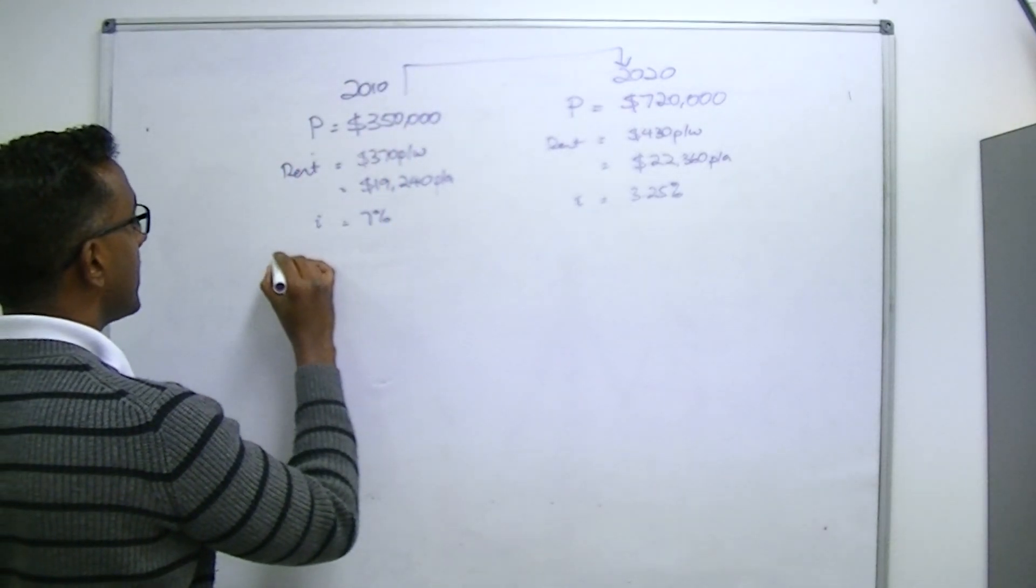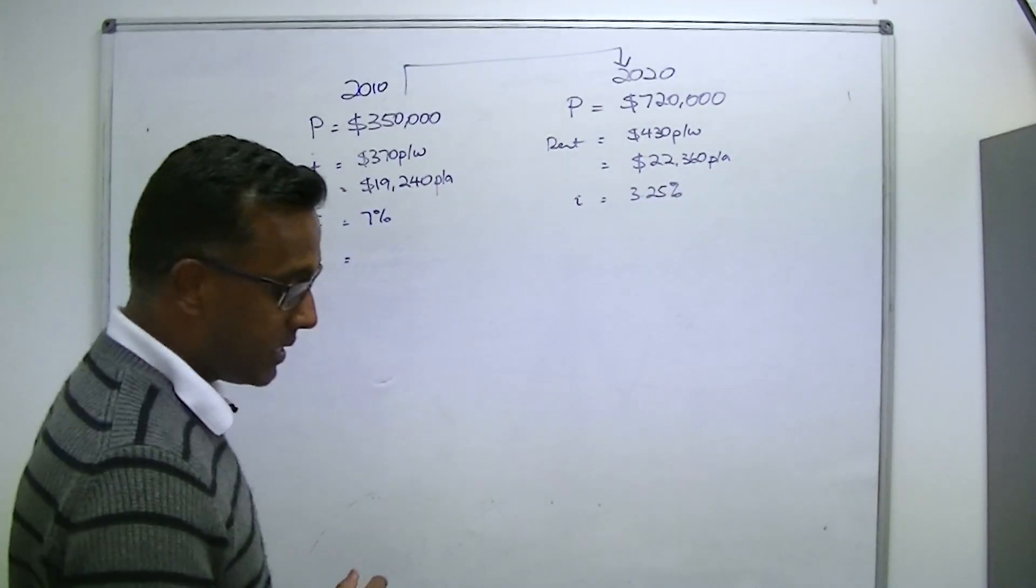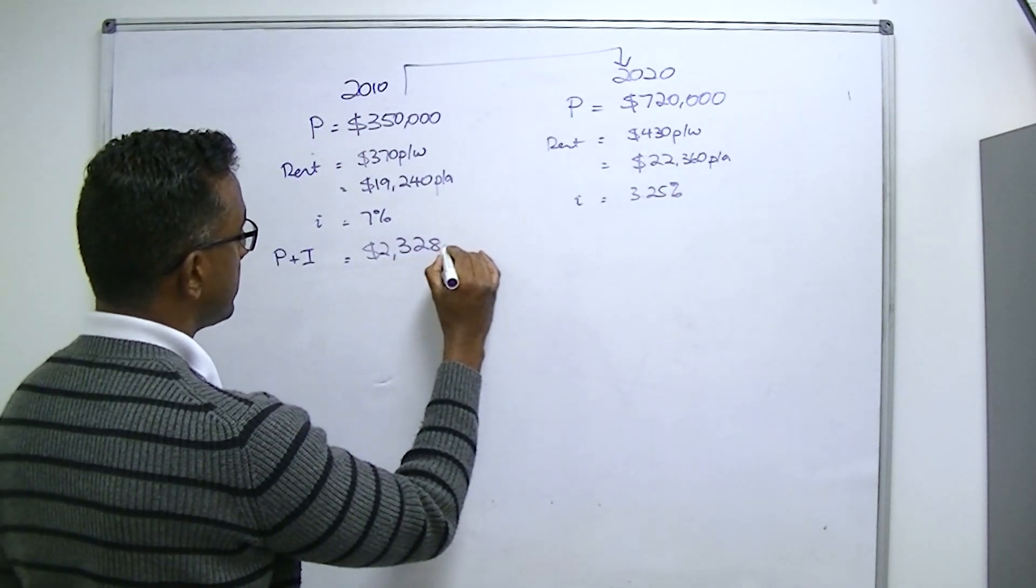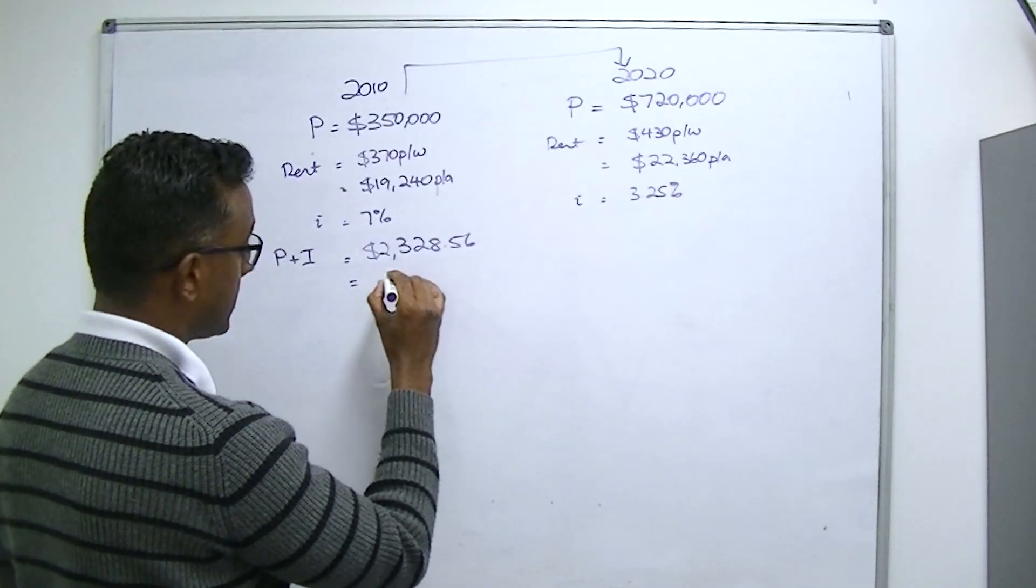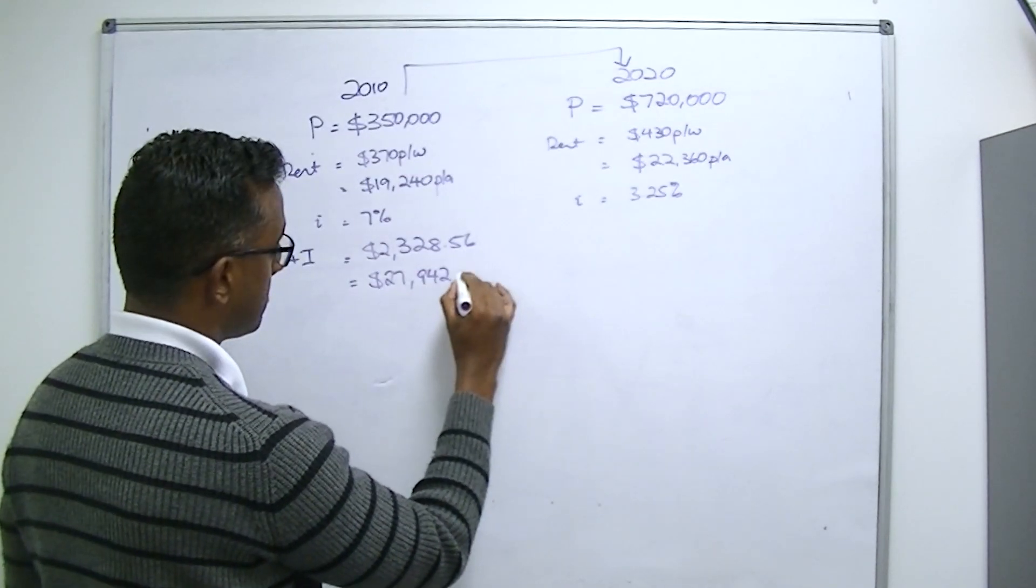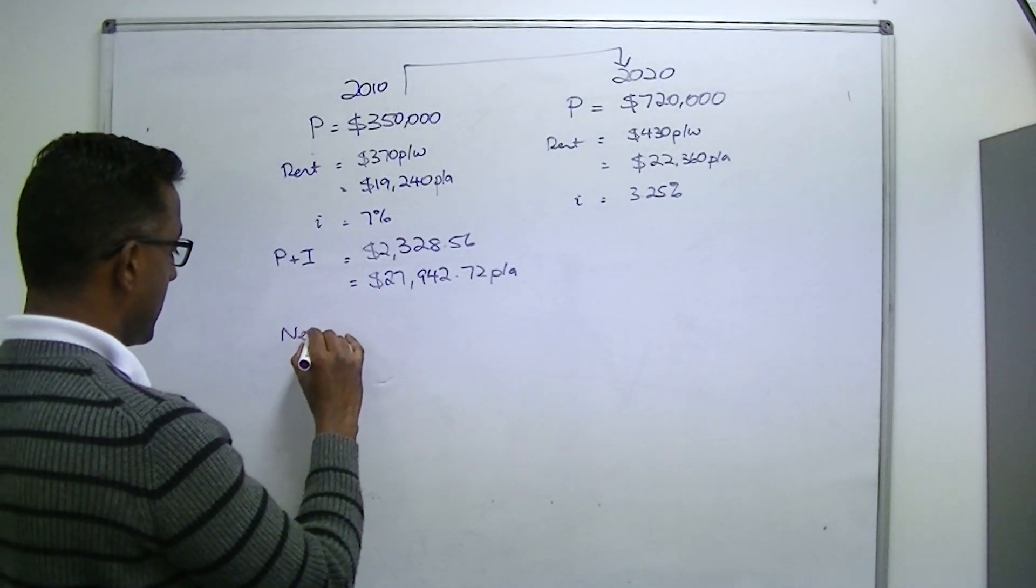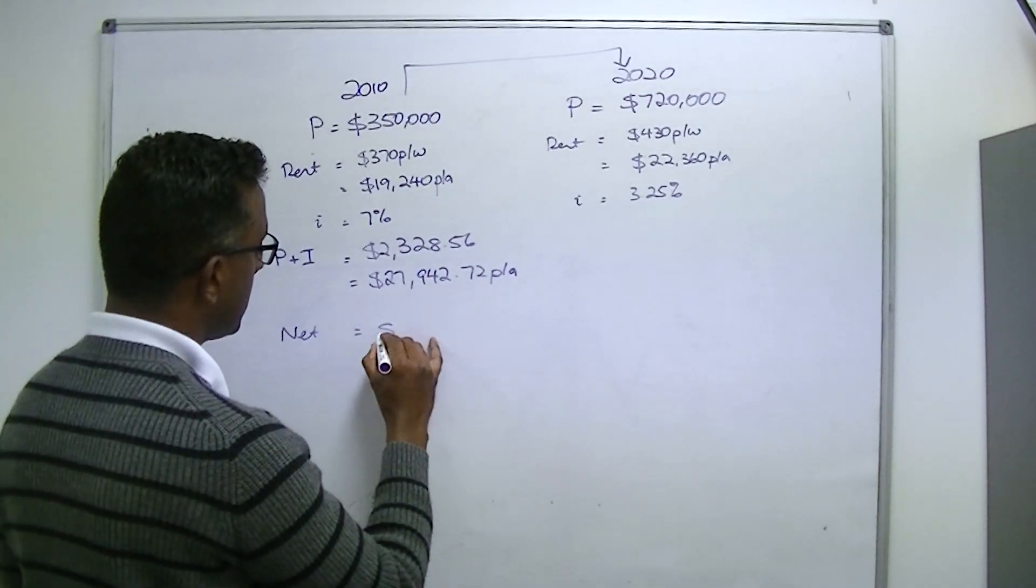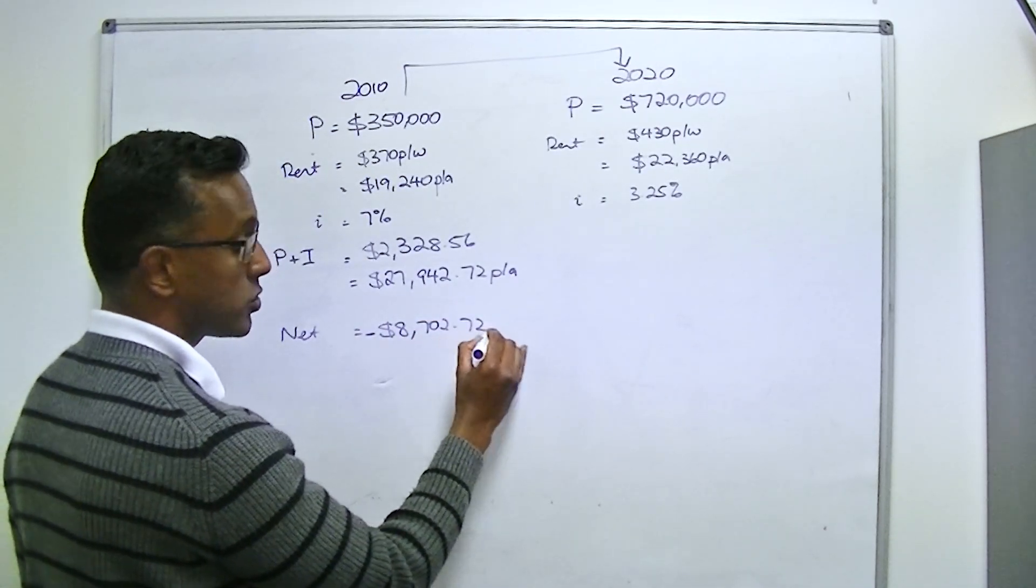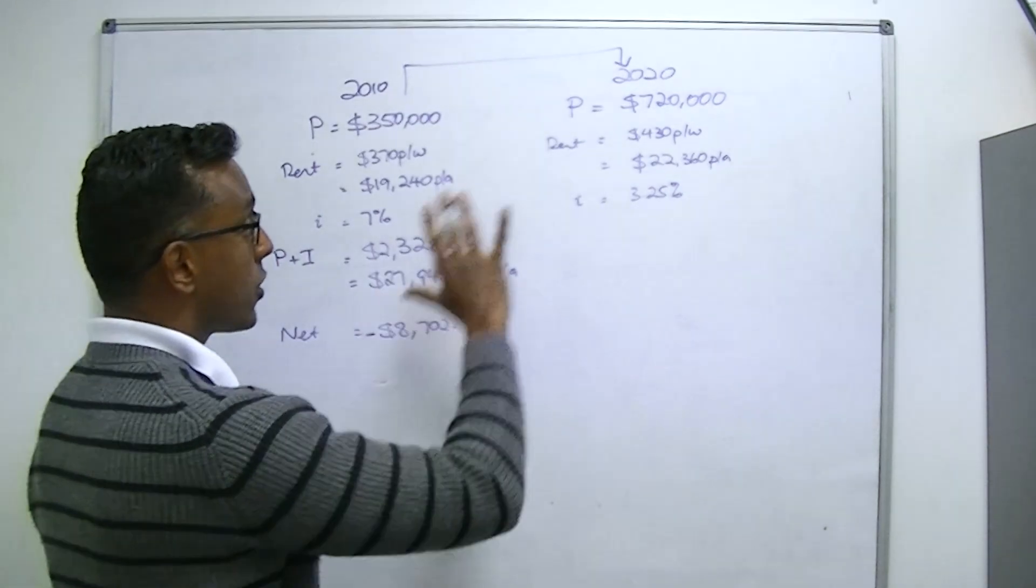In other words, a property that has risen in value by over 100%, where rents have only increased by maybe 20%, less than 20%, maybe 15%, yet it actually costs an investor $4,000 less on high-level numbers to hold the property today than it did back 10 years ago. Now, of course, some of you might be thinking, yeah, well that's great, this is an interest-only deal. Somewhere along the line, you're going to have to pay back the principal.